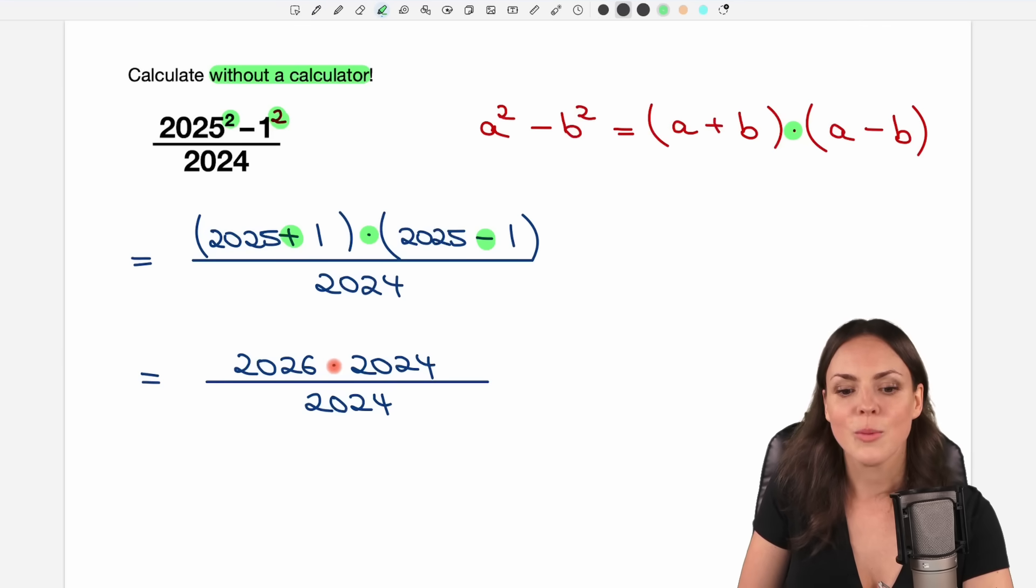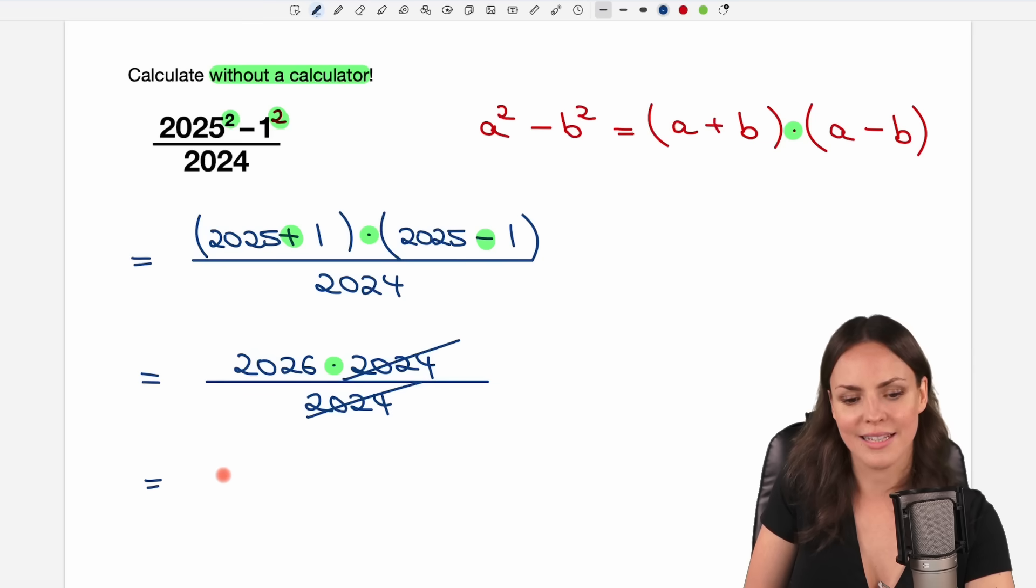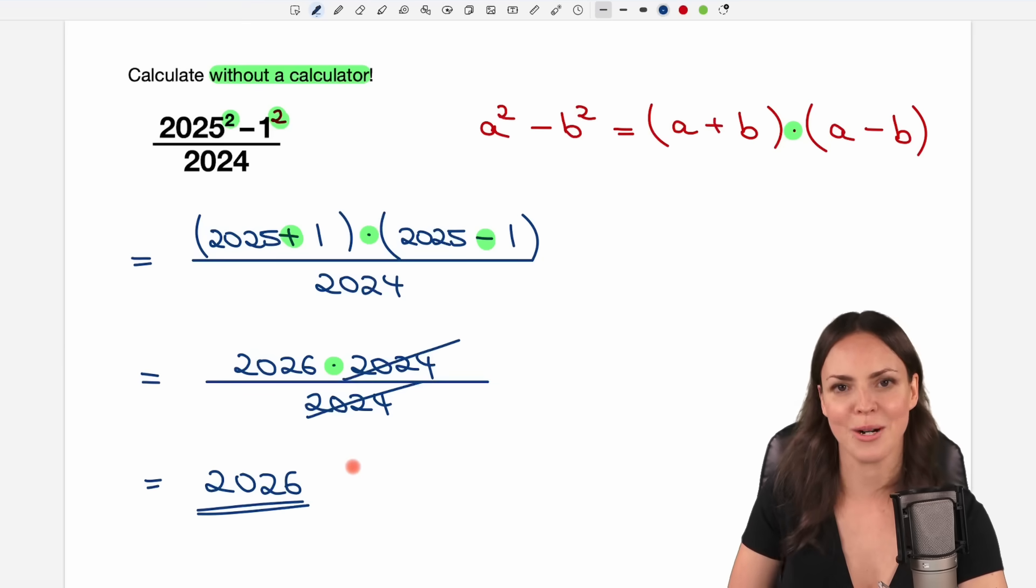Now, because we have a multiplication here, we are allowed to reduce this fraction. We have 2024 here, 2024 here—we can cancel it out. And the only thing that is left is our result of 2026. And we solved this problem.